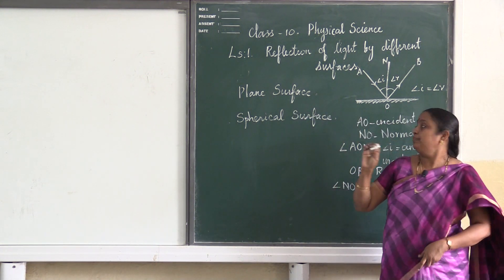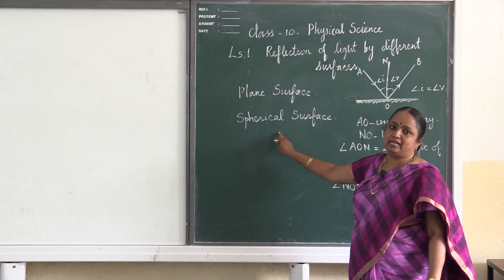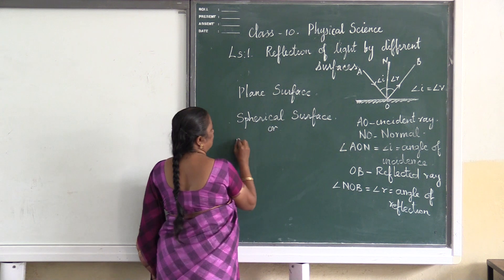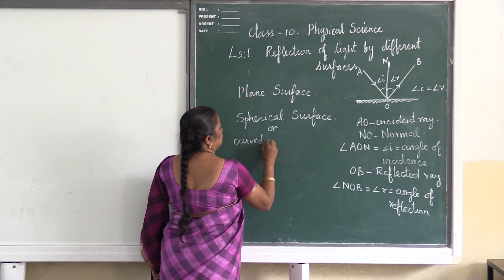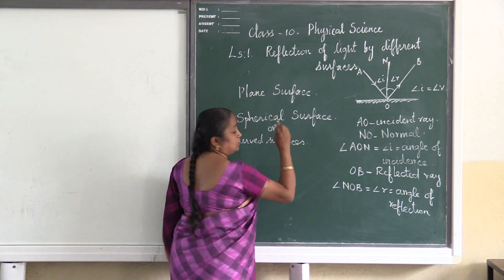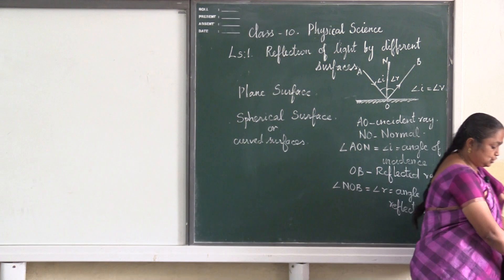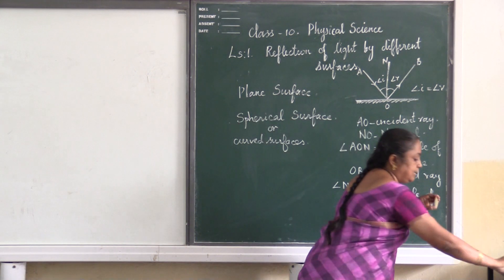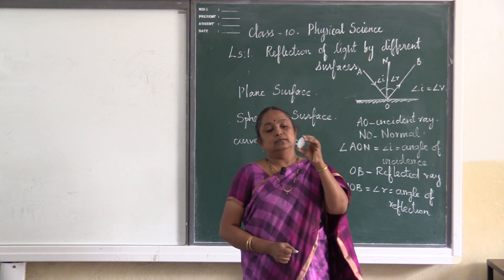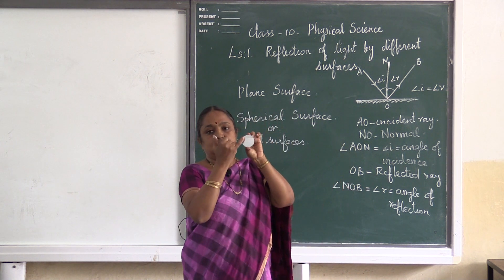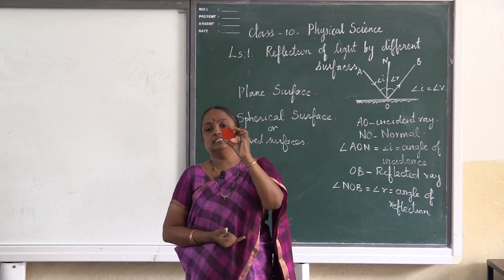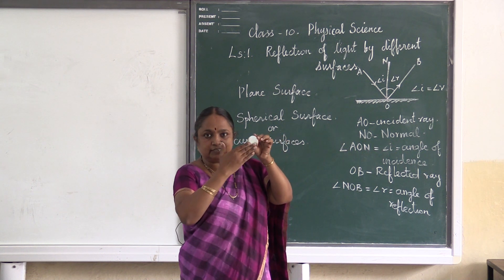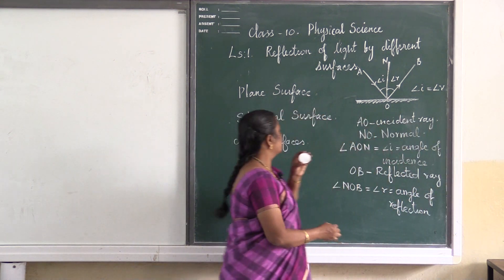Now what may happen to this reflection concept in the case of a spherical surface? To learn about the spherical surface we should know that spherical surfaces are also called curved surfaces. I will now show you the two different surfaces. I have a mirror in which this is the reflecting surface and this is the painted or shaded region. If you notice, the reflecting surface is curved inside — such a mirror is called a concave mirror.